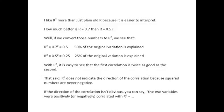That said, R squared does not indicate the direction of the correlation because squared numbers are never negative. If the direction of the correlation isn't obvious, you can say the two variables were positively or negatively correlated with R squared equals whatever that value may be.